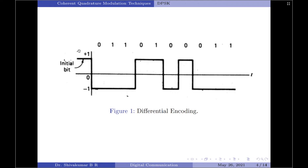In differential encoding, the information in the input binary sequence is encoded in terms of signal transitions. As shown in figure 1, we have assumed that the phase of the signal changes every time a symbol 0 is to be encoded, whereas whenever we have symbol 1 at the input, the phase of the transmitted signal remains the same. However, it should be noted that this is only a convention, and you can change the encoding by reversing the phase change for symbol 0 and symbol 1 respectively.